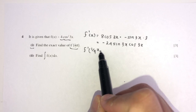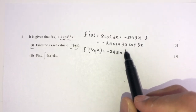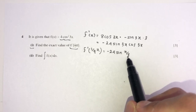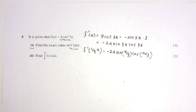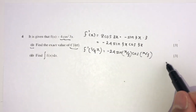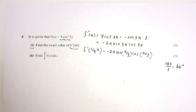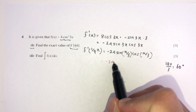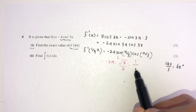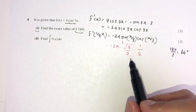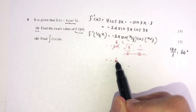Substituting x = π/9: 3 × π/9 = π/3 = 60°. So f′(π/9) = −24 sin(60°) cos⁷(60°). sin(60°) = √3/2 and cos(60°) = 1/2. Simplifying: −24 × (√3/2) × (1/2) = −6√3.